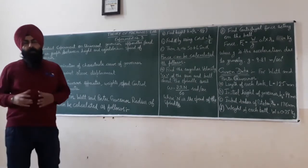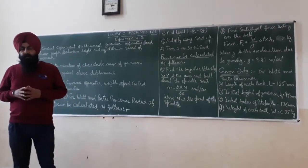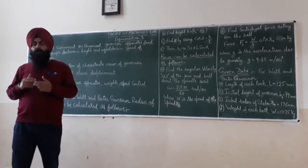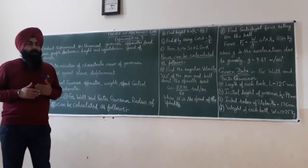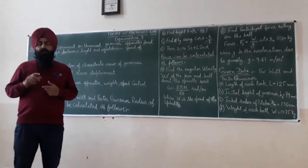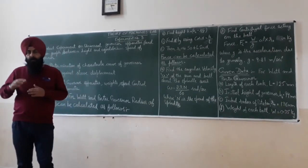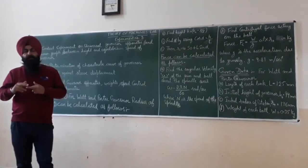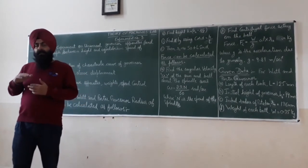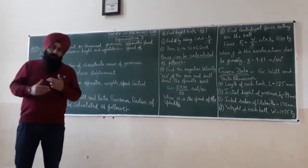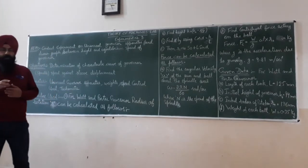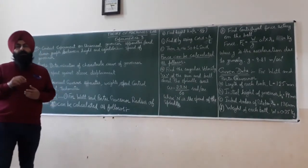The governor operates by adjusting the fuel quantity according to the speed variation of the engine. According to the speed variation of the engine, it adjusts the fuel quantity. If the load on the engine increases, it increases the quantity of fuel. So the governor maintains the equilibrium speed of the engine.